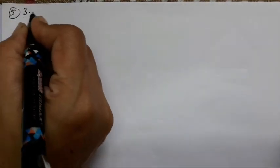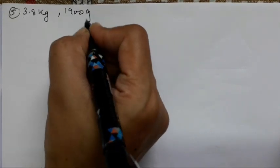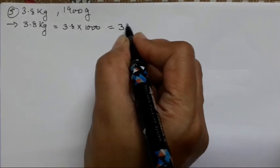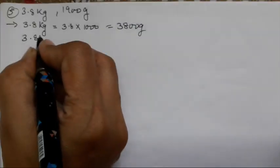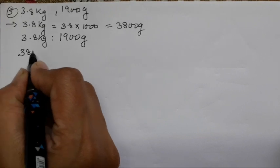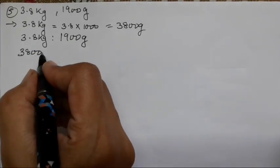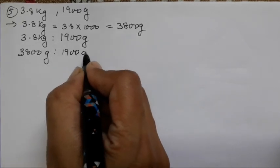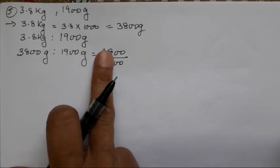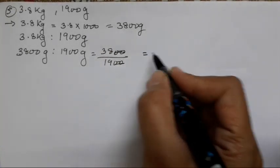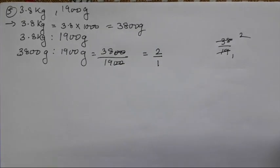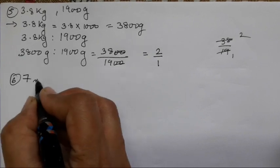The fifth one is 3.8 kg and 1900 grams. First convert 3.8 kg into grams by multiplying with 1000: that gives 3800 grams. So 3800 grams as to 1900 grams. We have 3800 upon 1900. We all know the 19 times table: 19 ones are 19, 19 twos are 38 — so cancel and the answer is 2 upon 1.